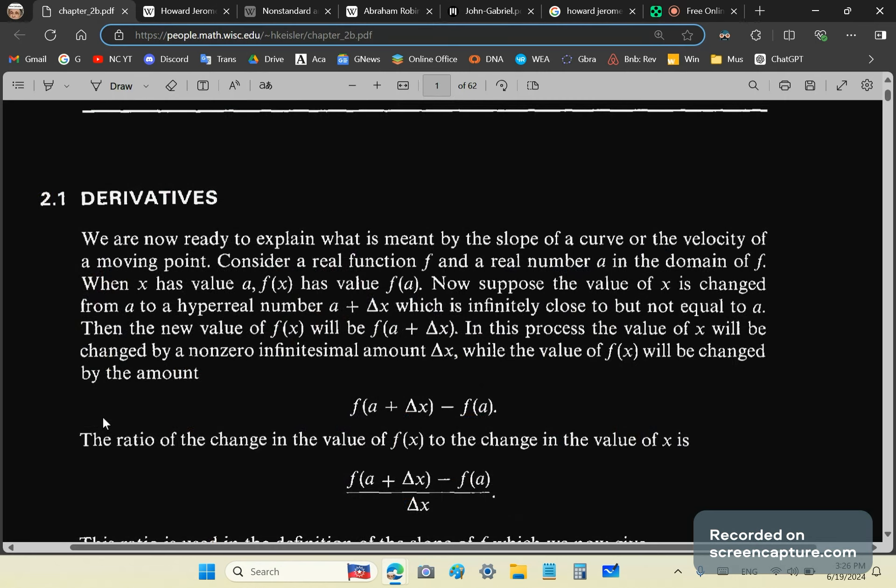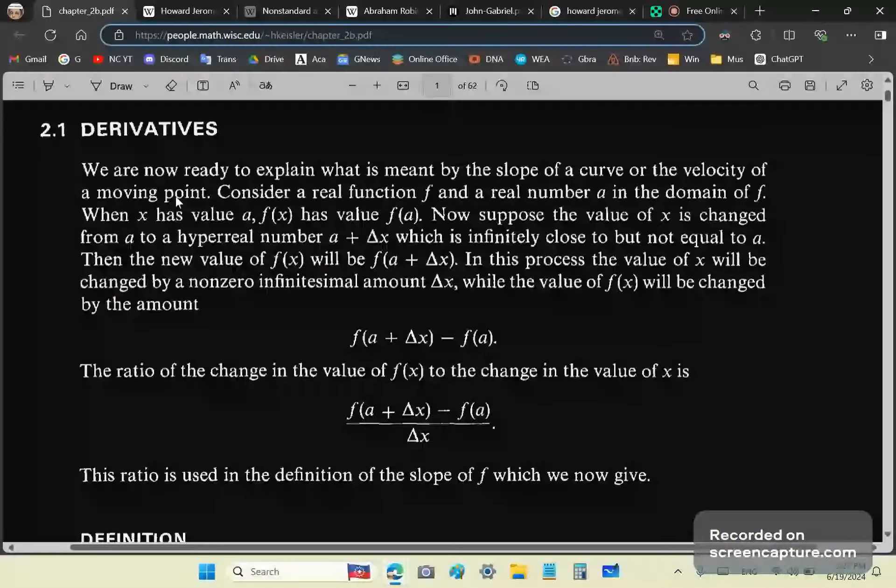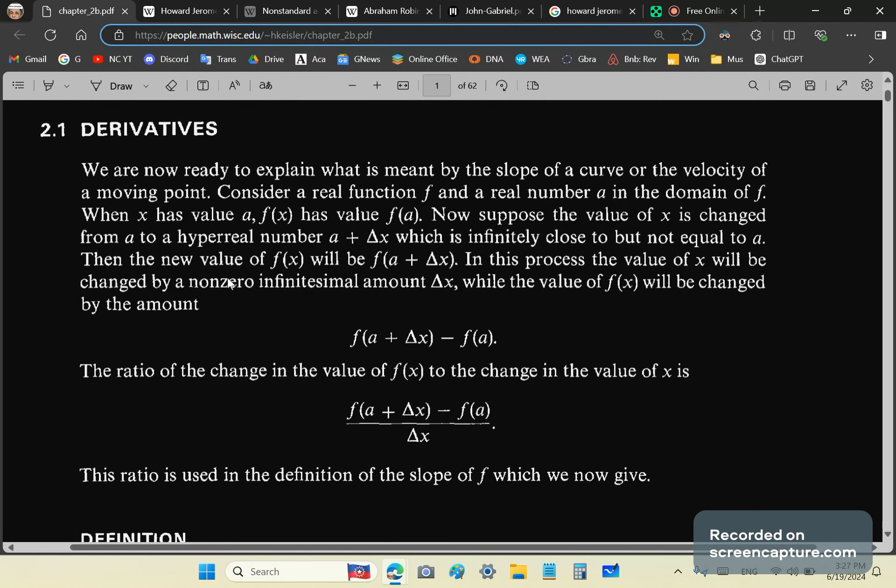So he says, we are now ready to explain what is meant by the slope of a curve or the velocity of a moving point. It's so incoherent that it's hard to make sense because the velocity of a moving point is just not even wrong. Points don't move, and they don't have velocity. So it's just from the very first sentence, it's mind-numbing garbage.